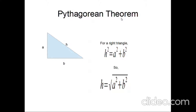Something we'll be using in this video is the Pythagorean theorem because we want to know the distances between these points. We have two legs of a right triangle, A and B, and the hypotenuse H. H squared equals A squared plus B squared. Solving for H, we take the square root of the right-hand terms: H equals the square root of A squared plus B squared.